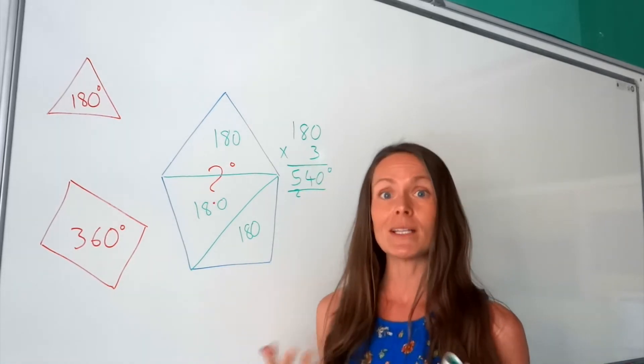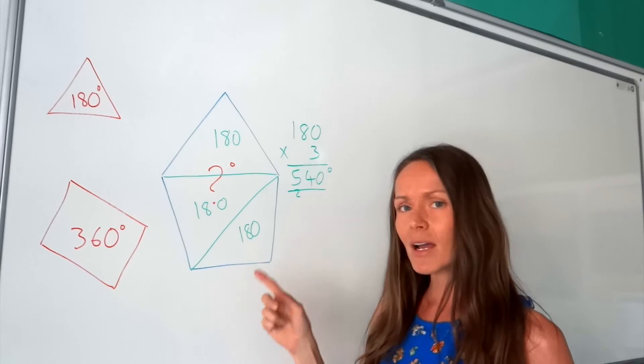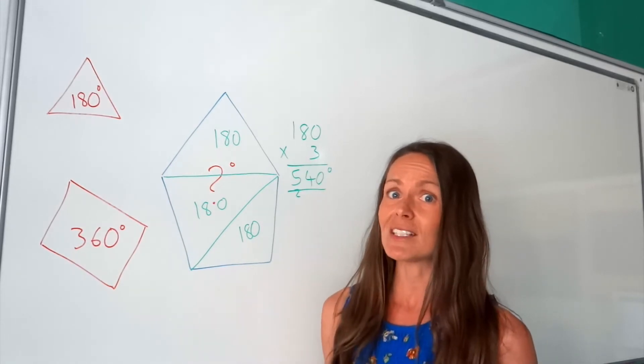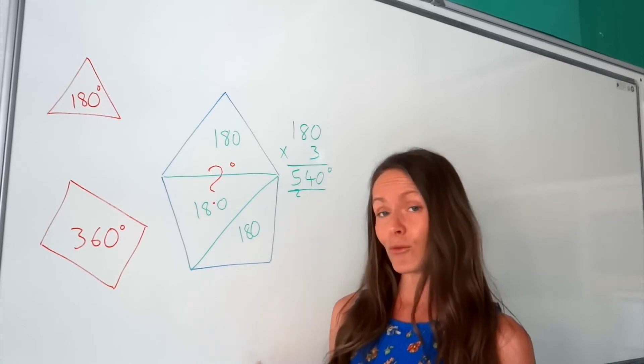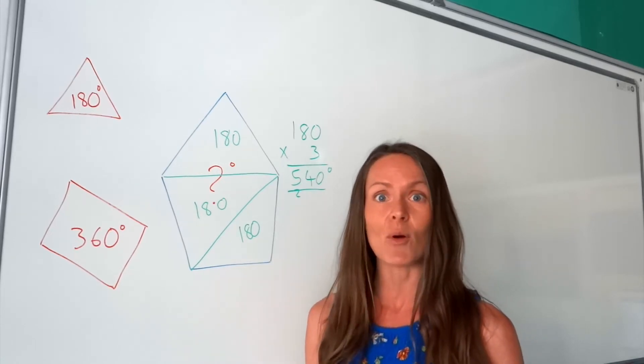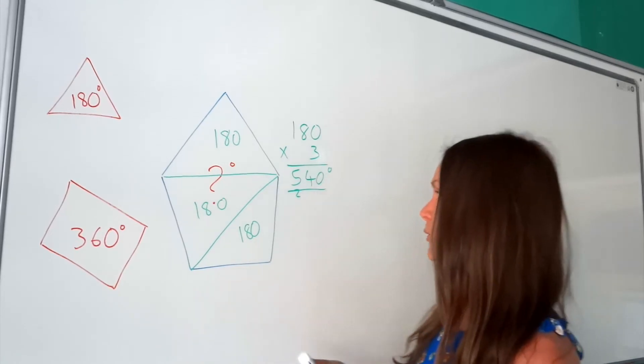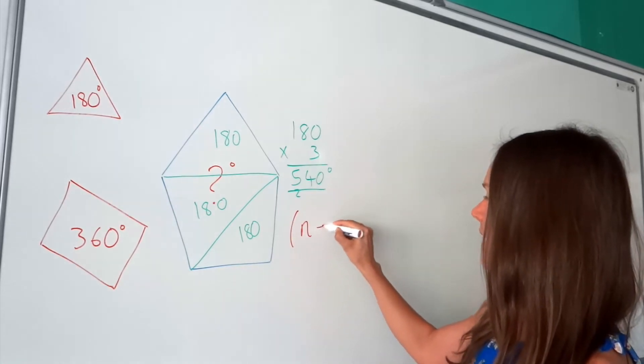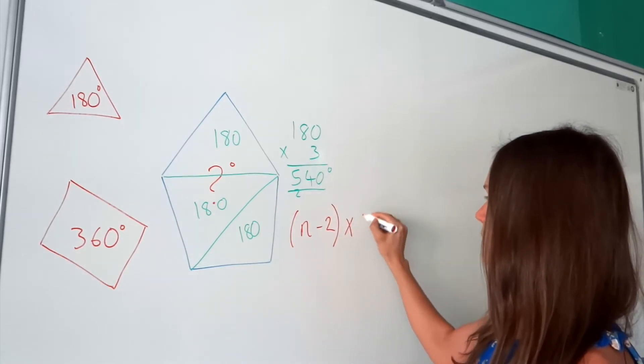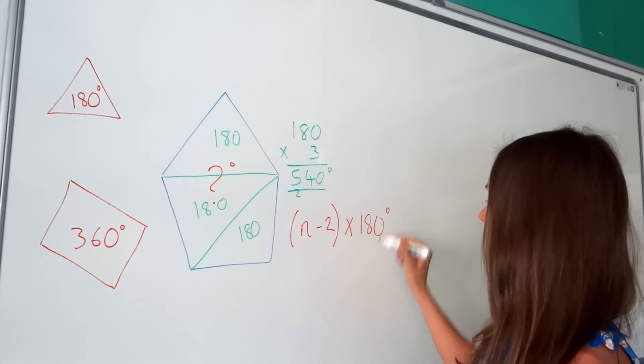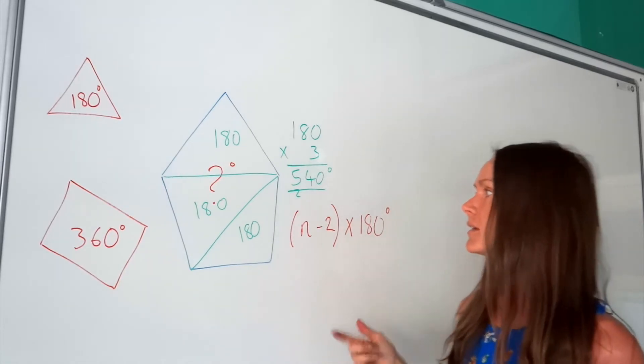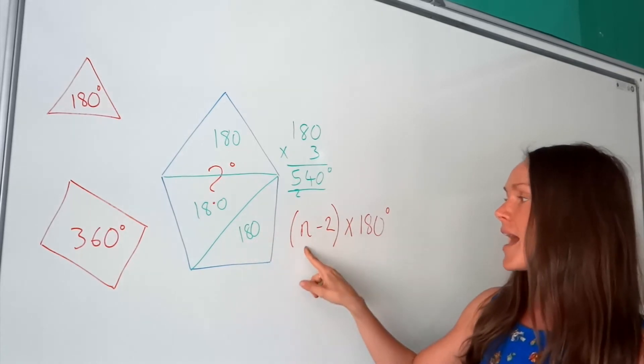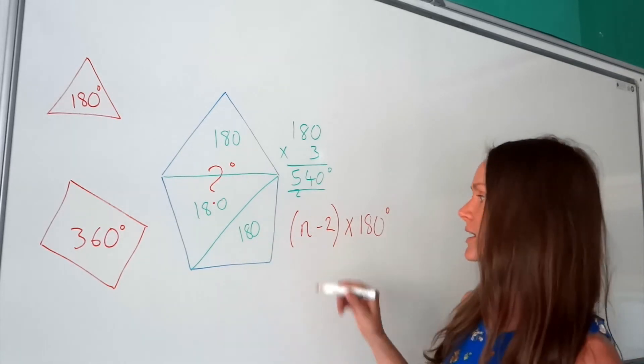So you could always just draw in the triangles and then use this method. But if they give you a 24-sided shape, it might be a bit tedious, a bit long-winded to draw all the triangles in. So I'm going to show you a formula that works out the sum of interior angles. So the formula is n minus 2 times by 180 degrees. So we actually use this without even realising it in this question here. N is the number of sides.